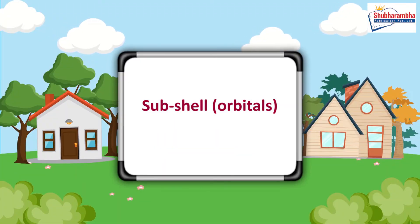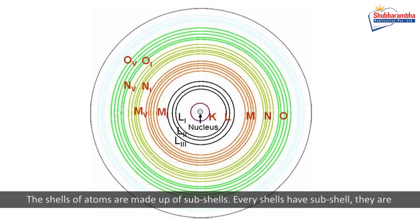Subshells and orbitals. The shells of atoms are made up of subshells. Every shell has subshells. Their names are S, P, D, F.